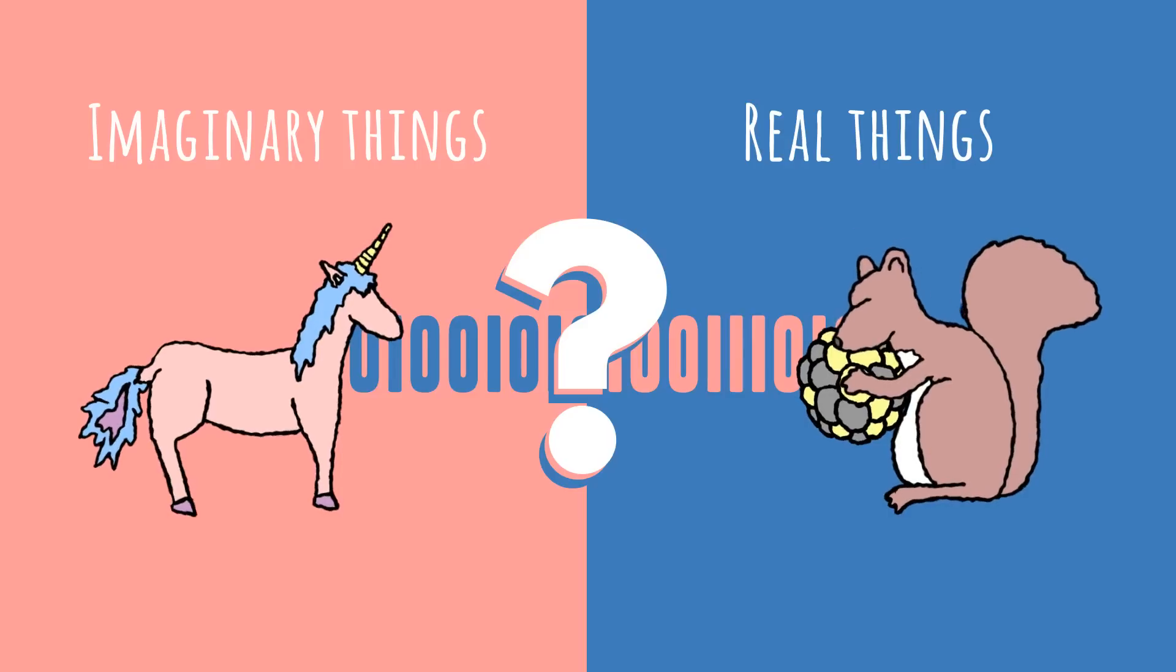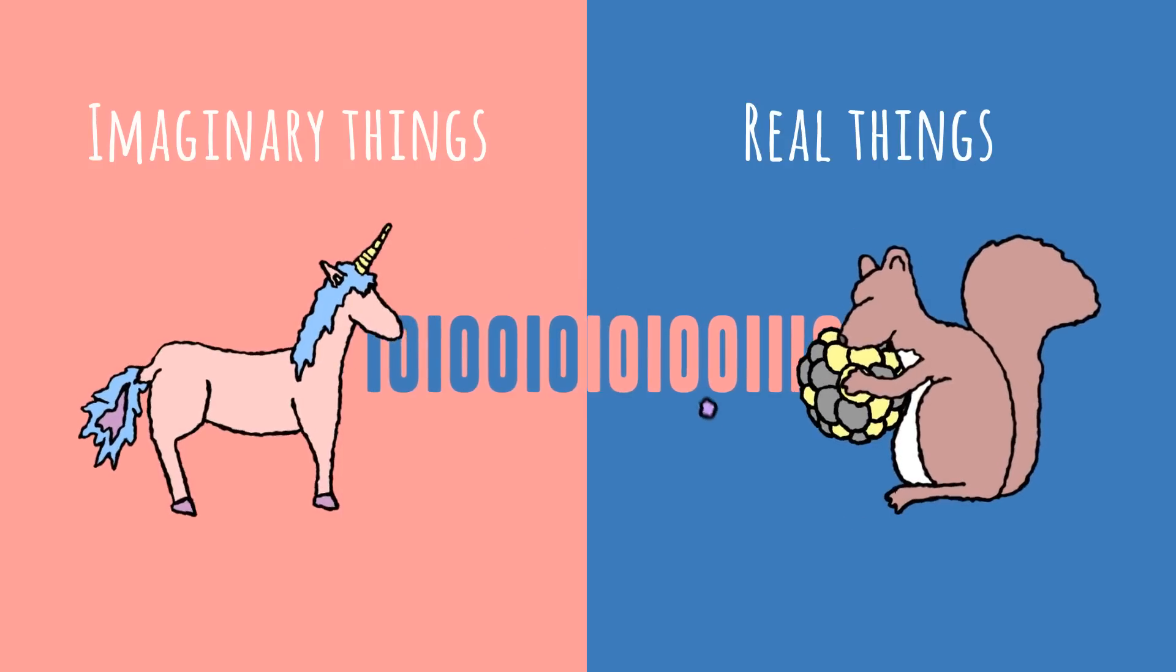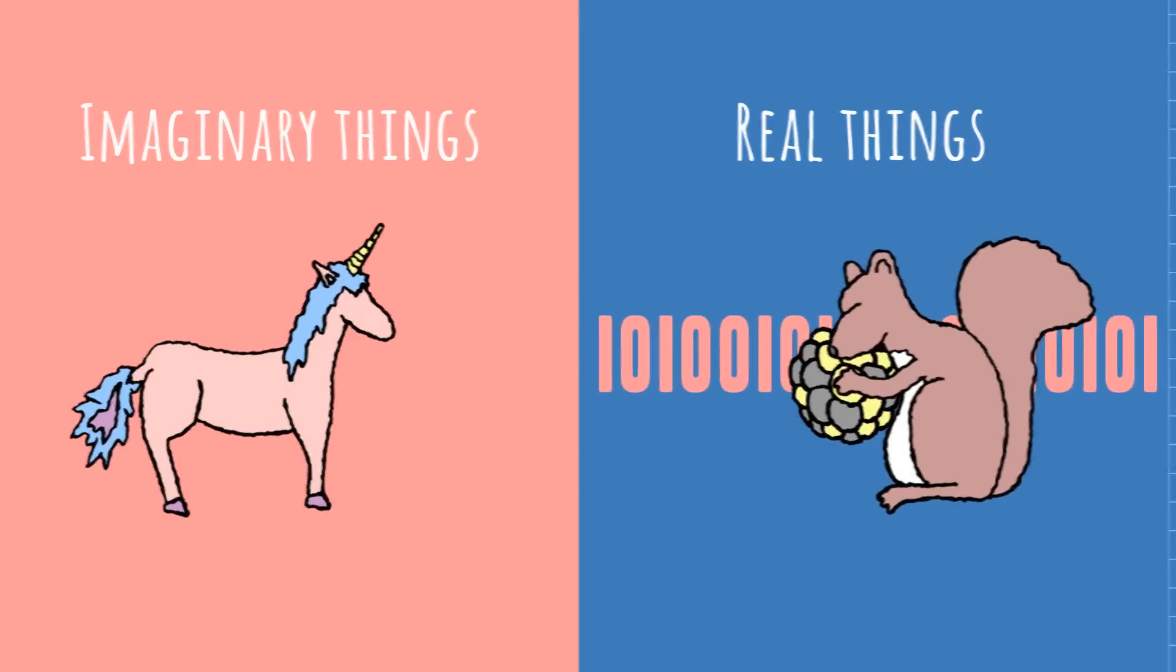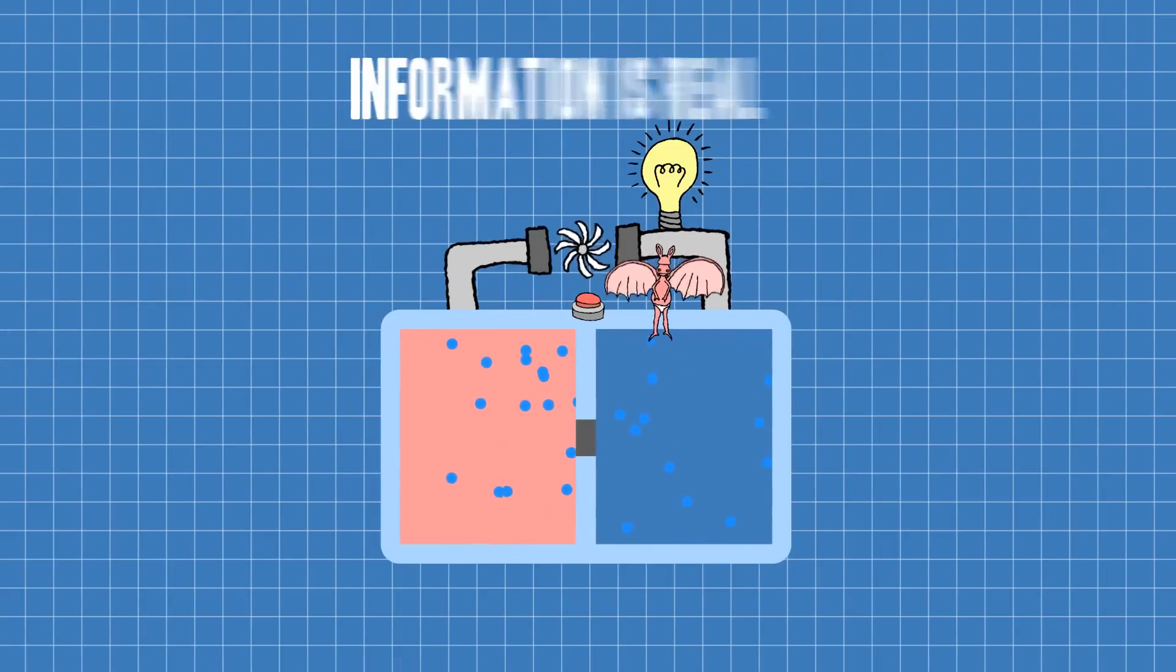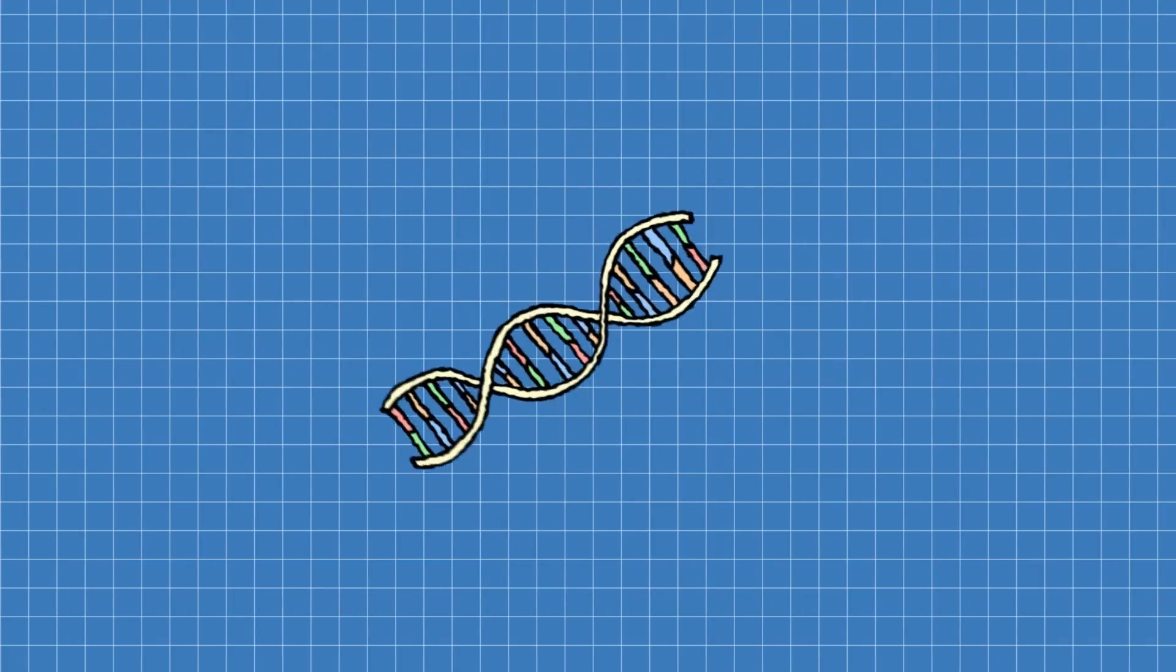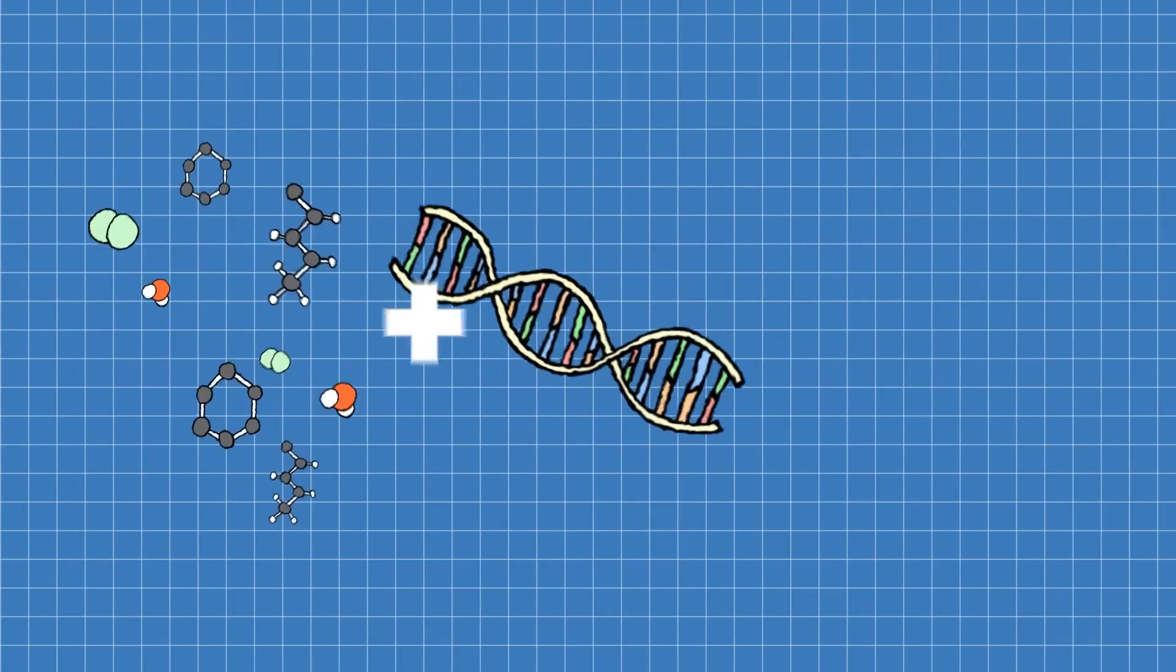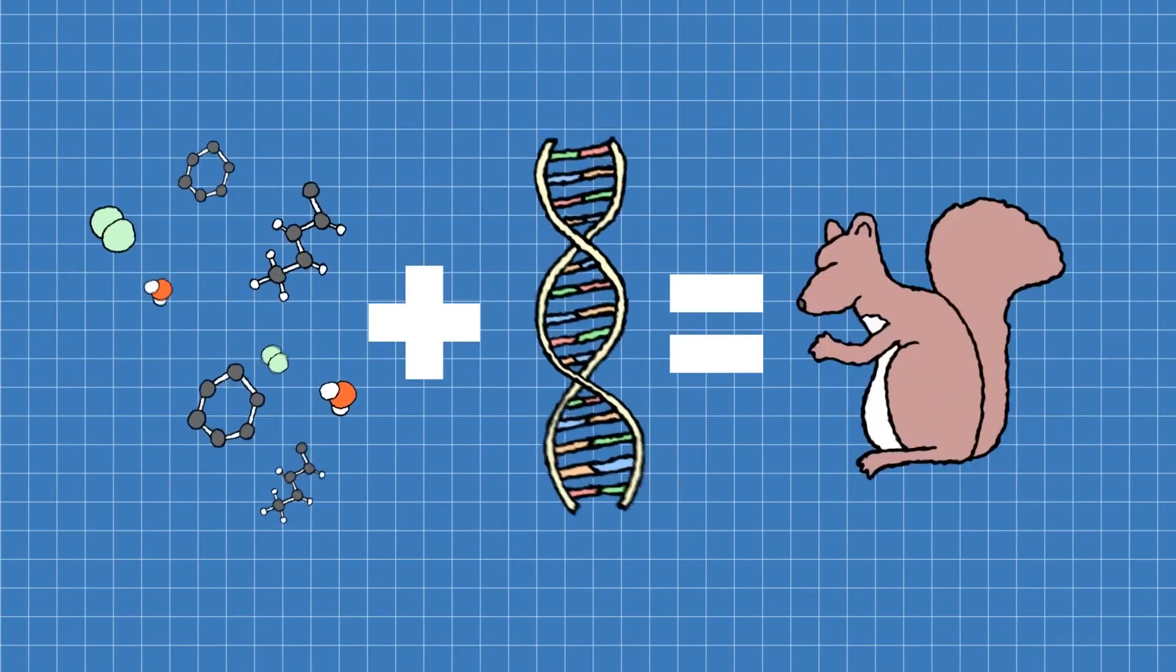And that makes it seem like information isn't just something our stupid monkey brains made up. It's the thing that converts the random chaos of gas in a box into something useful. Kind of like how the information in DNA is the thing that makes a bunch of random molecules into a squirrel.